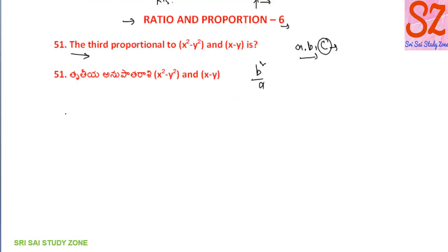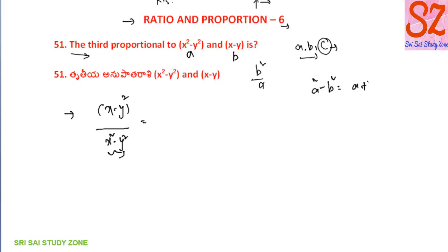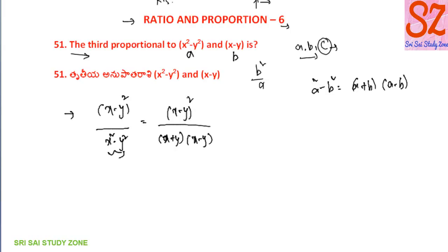The ratio is a, b. Now the ratio is b, c squared. We need to find a squared minus b squared, which equals a plus b into a minus b. So a plus x plus y into x minus y. That is equal to x minus y into x minus y, which is x minus y whole square. So db and this cancel, giving x minus y by x plus y.